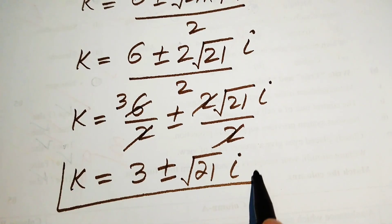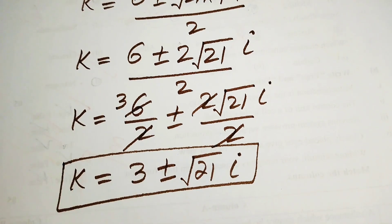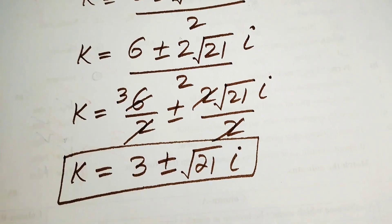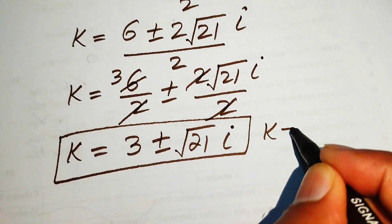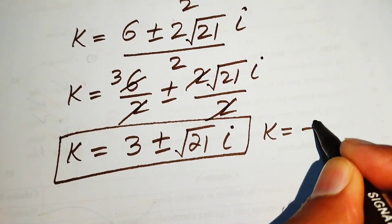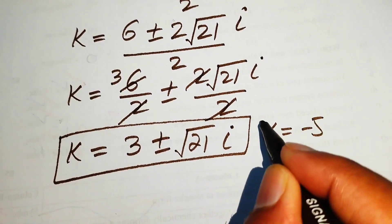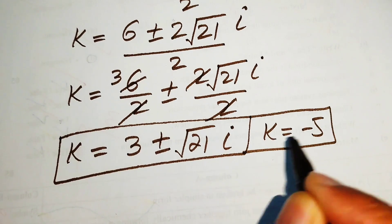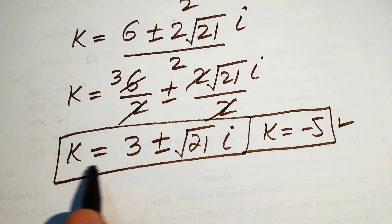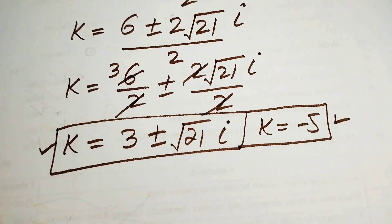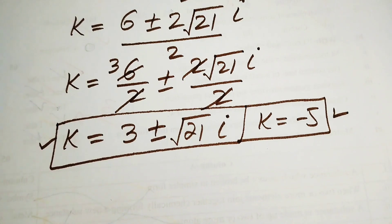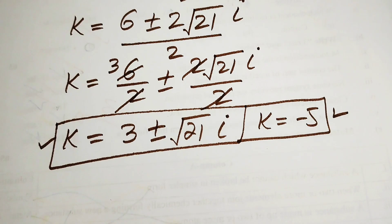These are the two complex roots of the equation. Combined with the real root k equals minus 5, we have all three roots of the given equation. This is the final answer. Thank you for watching — please subscribe to my channel for more videos.